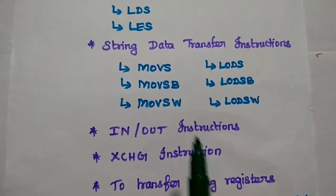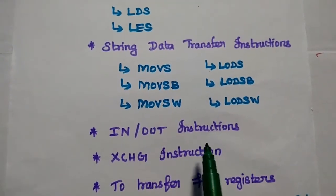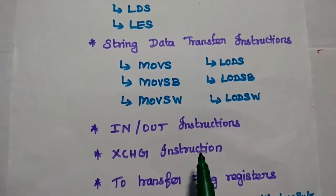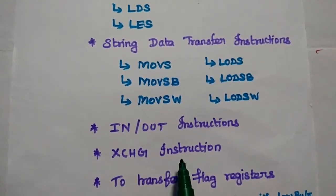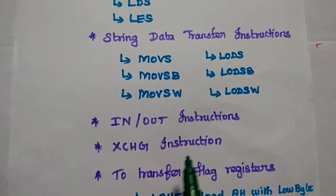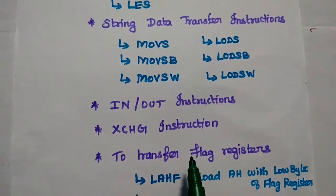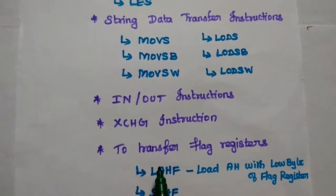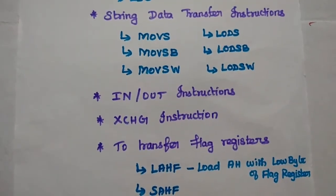Next are In-Out Instructions. These instructions are used to connect Input and Output Ports. If you want to transfer data between Input and Output, we can use these In-Out Instructions. Next is Exchange Instructions. Here we can exchange data between two registers or the Segment Registers.